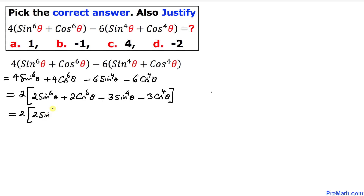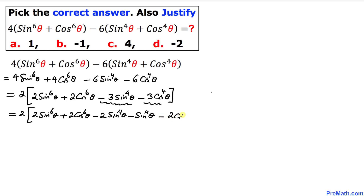In the next step, let's write this inside a bracket. We have 2 sine to the power 6 theta plus 2 cosine to the power 6 theta. Now the negative 3 sine to the power 4 theta can be written as negative 2 sine to the power 4 theta minus sine to the power 4 theta, and likewise the negative 3 cosine to the power 4 theta becomes negative 2 cosine to the power 4 theta minus cosine to the power 4 theta.